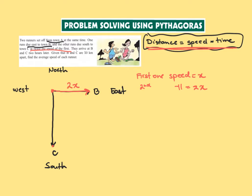So that's going to be the distance traveled. And then this one here we know that the speed is 2x and they're running for two hours, so it's going to be multiplied by two, so that's 4x.